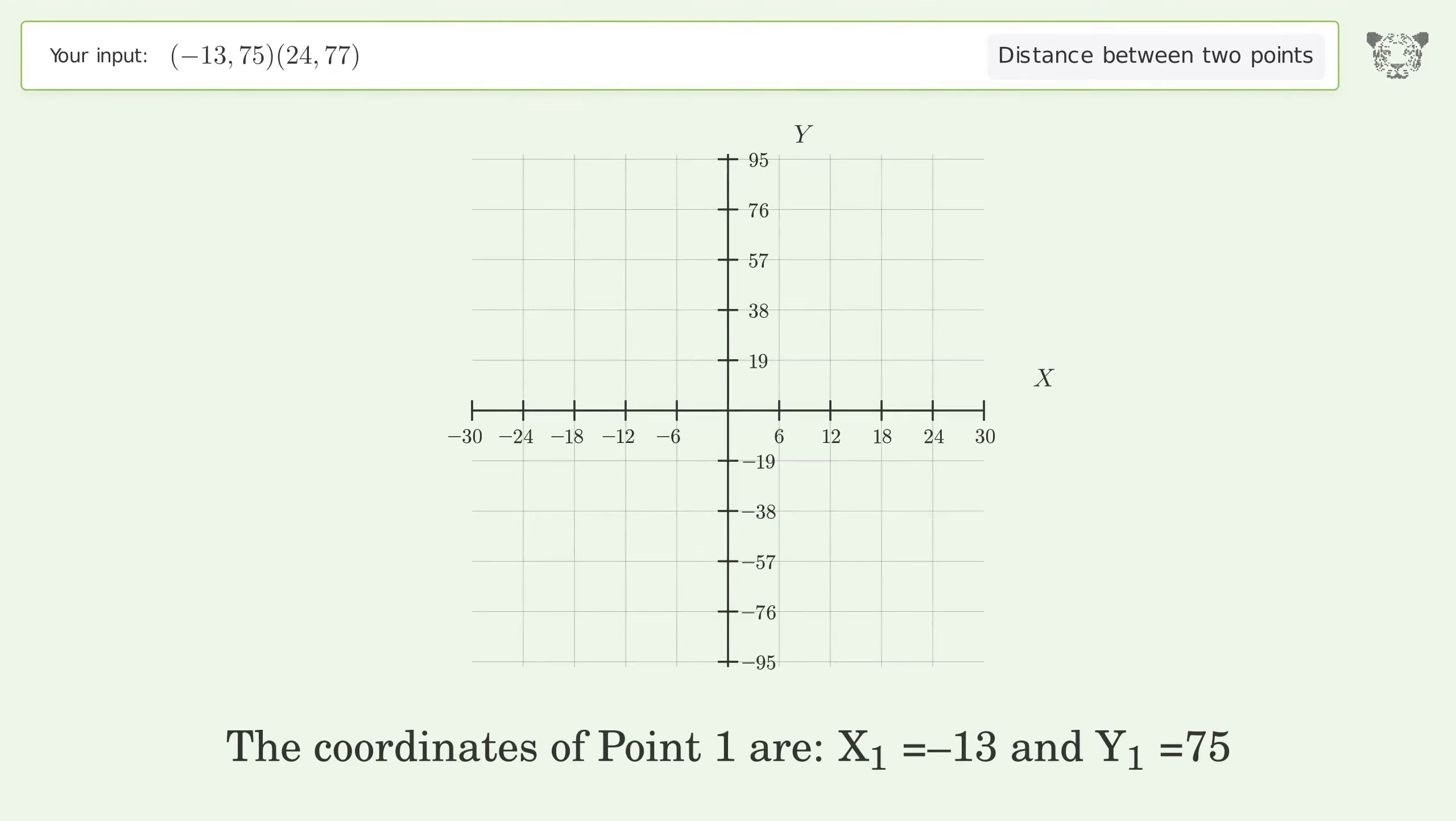The coordinates of point 1 are x₁ equals negative 13 and y₁ equals 75. The coordinates of point 2 are x₂ equals 24 and y₂ equals 77.